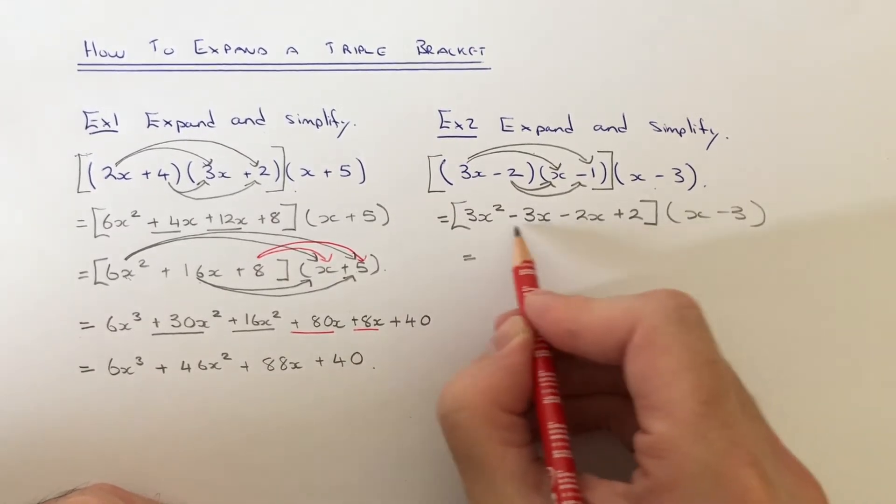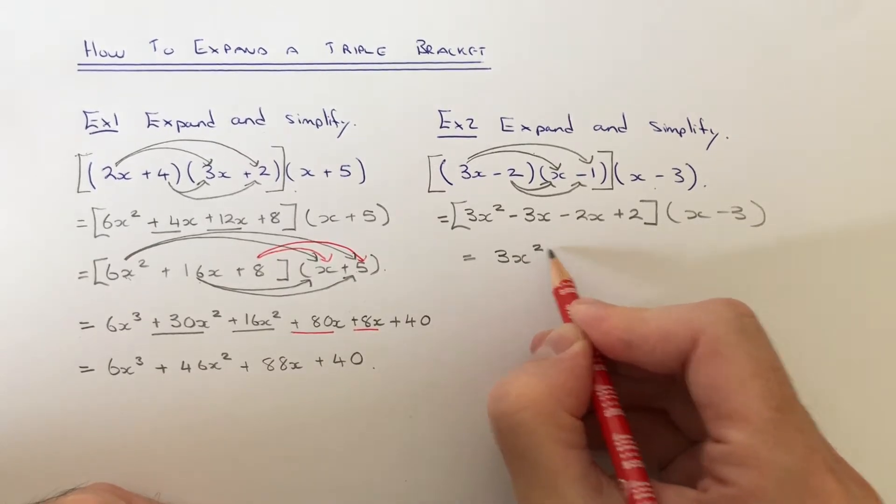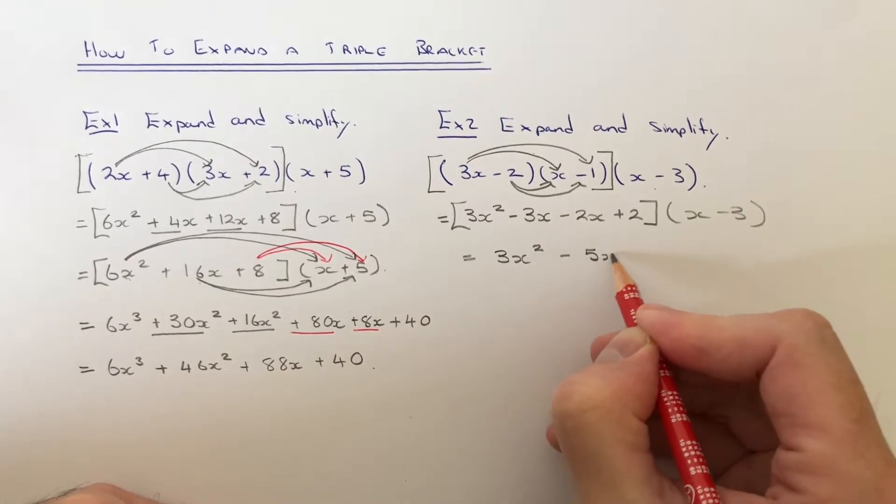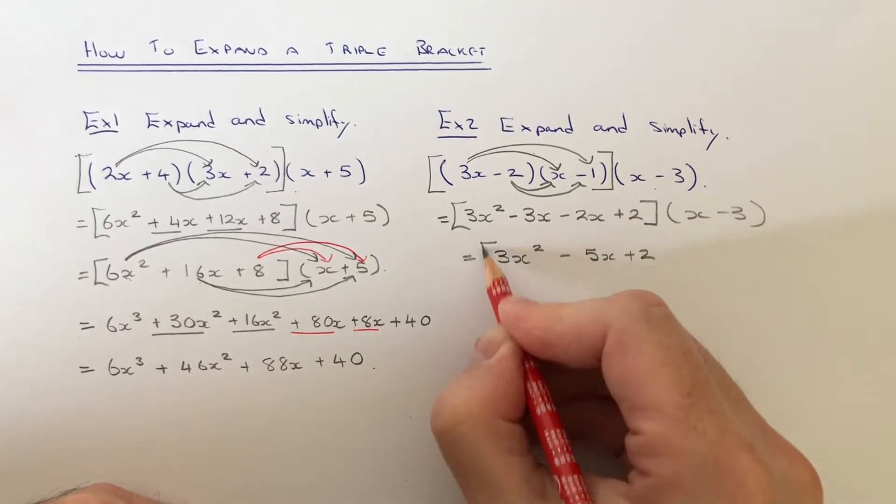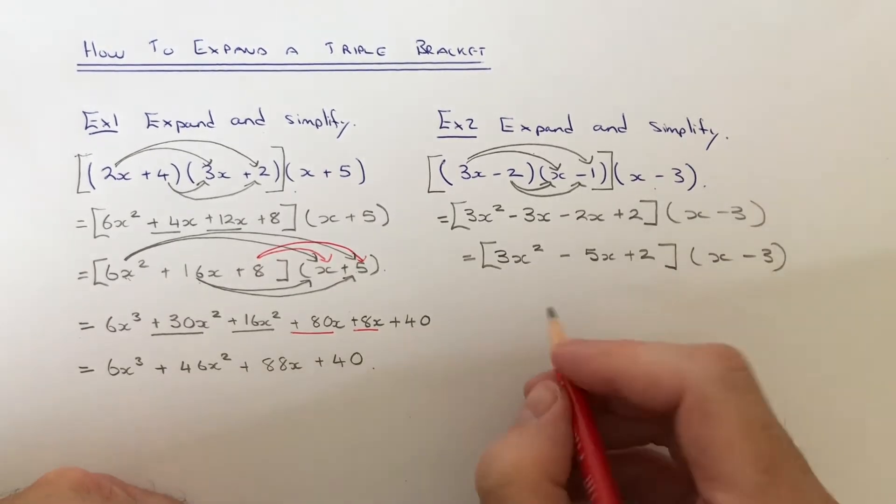Let's just simplify the first bracket before we go any further. That would give us 3x squared minus 5x plus 2. So we've now got to multiply that by the x minus 3.